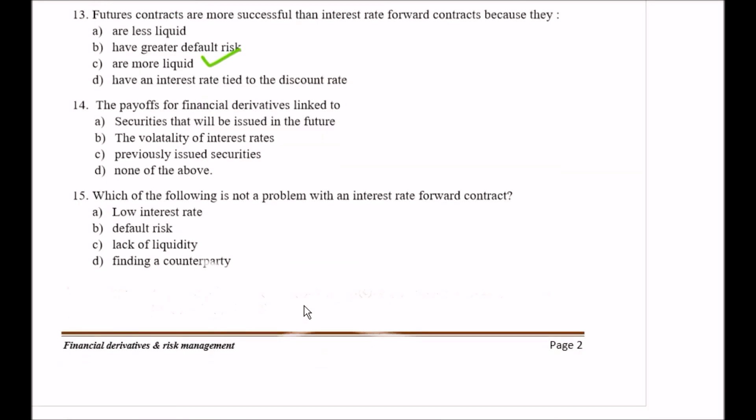Question number fourteen: The payoffs of financial derivatives linked to Option A securities that will be issued in the future, Option B the volatility of interest rates, Option C previously issued security, Option D none of the above. So here your right option is Option C, that is previously issued securities.